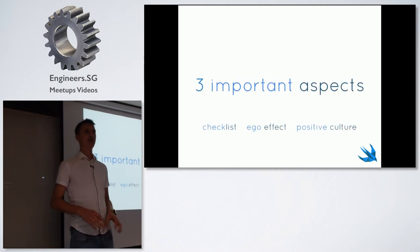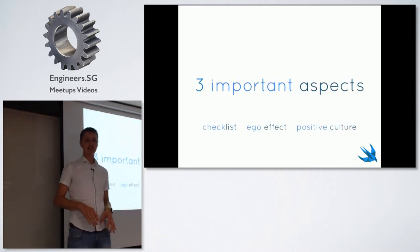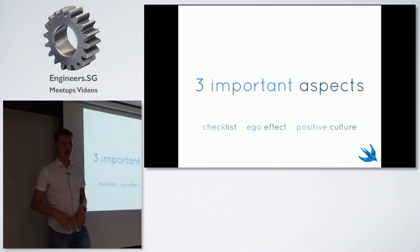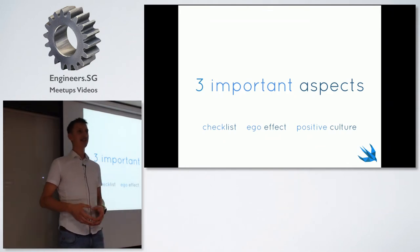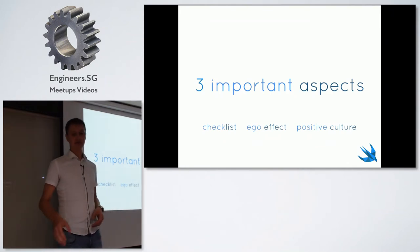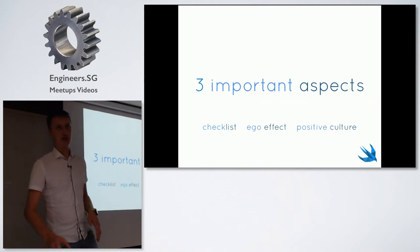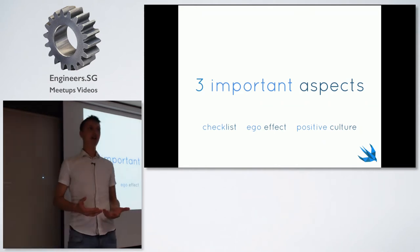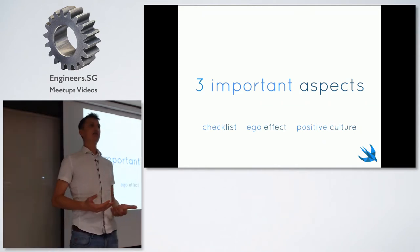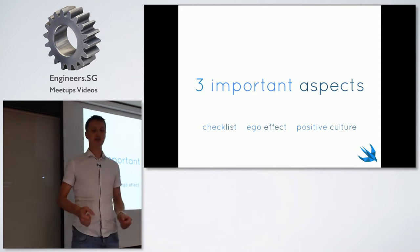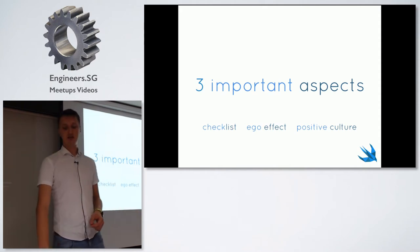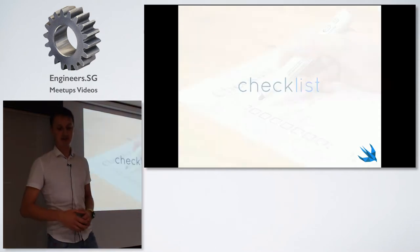There are three important aspects connected to code reviews: checklists, ego effect, and positive culture. These are very important when introducing such processes, like code review, at your workplace.